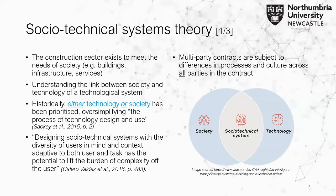This idea of socio-technical systems theory is really about understanding what the link is between society and technology. Unfortunately, in the past there's been a focus on either one or the other, rather than both together. The idea is to think about how diverse users think about and use different systems, different assets, different buildings within the built environment, and try to think about how you take complexity off the user.